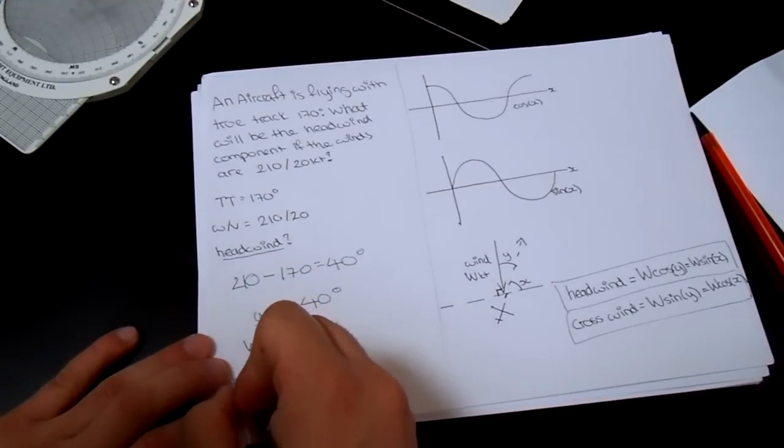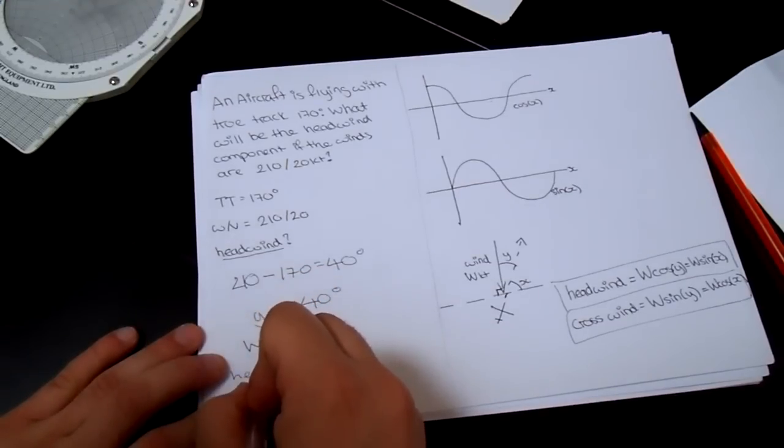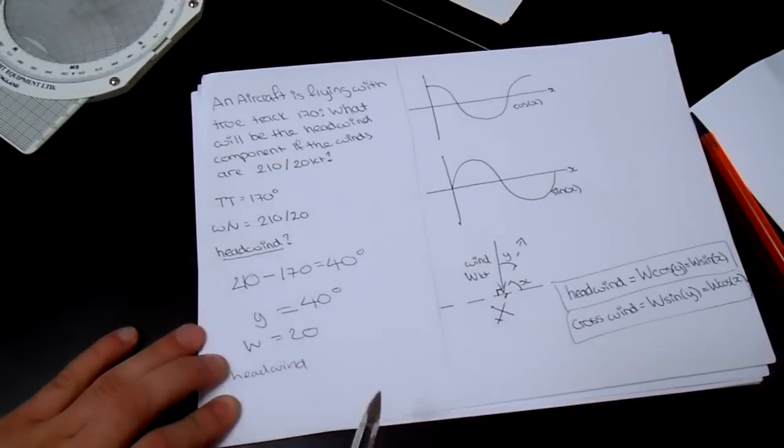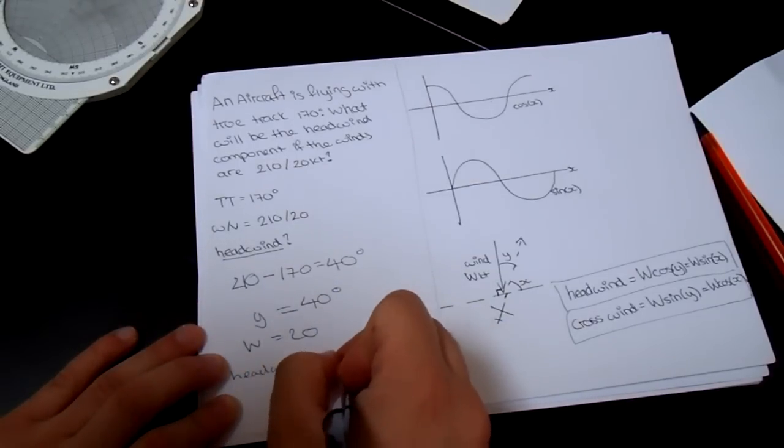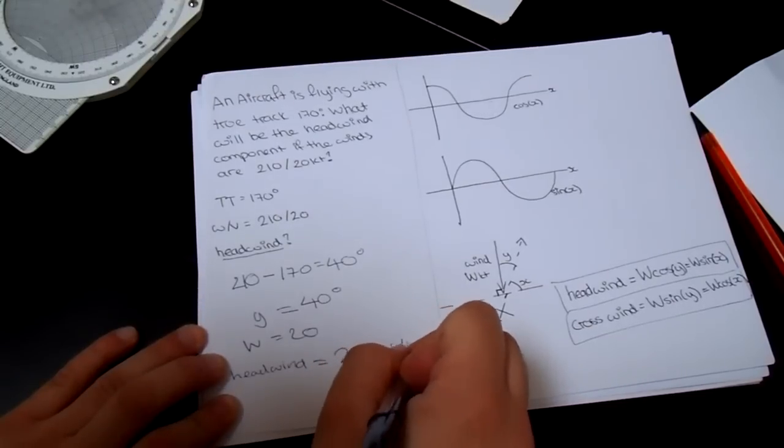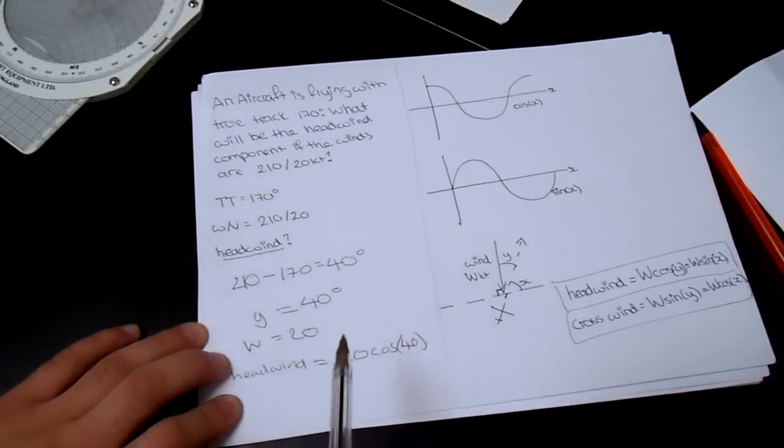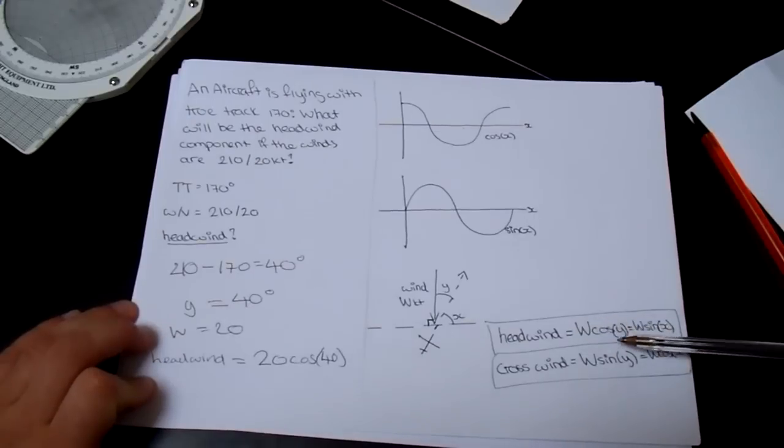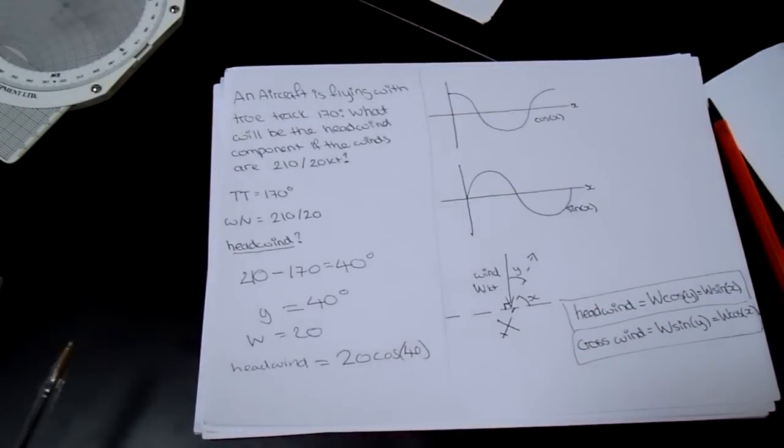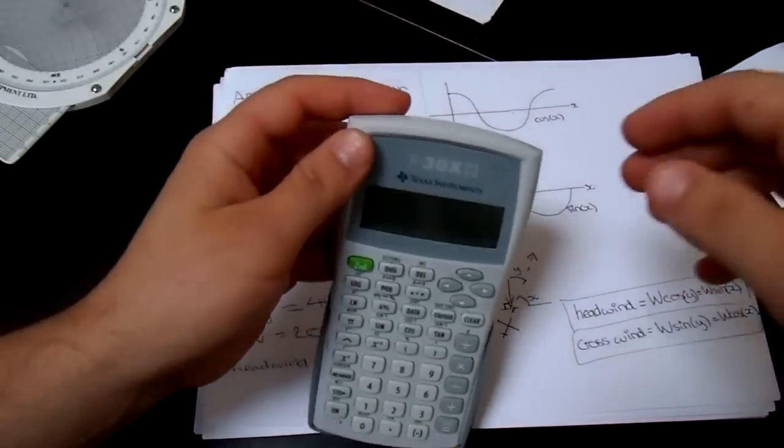Therefore, if we look at the headwind, we have headwind, I'm writing through the camera stance, which makes this really hard. Headwind equals 20 cos 40. Because if we look at the earlier equation here, headwind is W cos Y. So, headwind equals 20 cos 40.